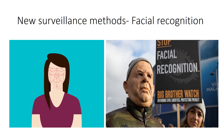A new surveillance method that could potentially be used in the future by Police Scotland is facial recognition. There is a lot of debate about the use of facial recognition and a lot of people against it. This is an example here of outside a stadium in Wales — Cardiff Football Club Stadium — where it says 'Stop Facial Recognition, Big Brother Watch, defending civil liberties, protecting privacy.' So that's people campaigning against facial recognition because they feel it's an invasion of their privacy.